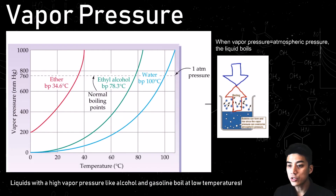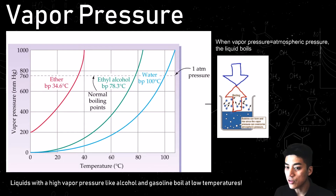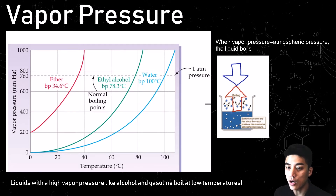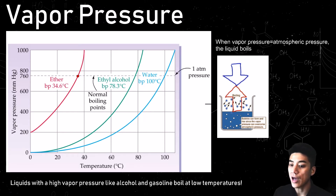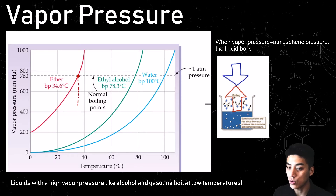Vapor pressure can be understood by reading this graph. We have three different liquids here: ether, which is some sort of flammable liquid, ethanol, and water. If you have a high vapor pressure, like alcohol and gasoline, you're going to boil at a much lower temperature, and you evaporate a lot more quickly.